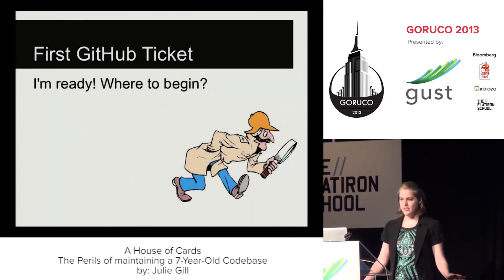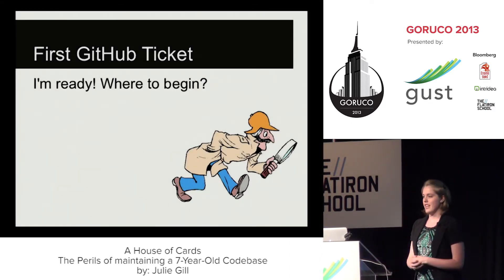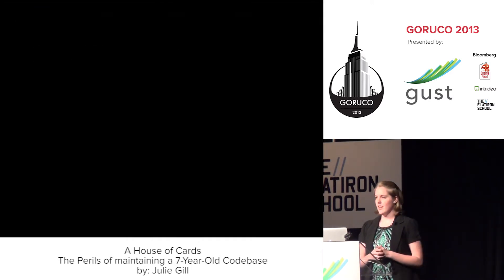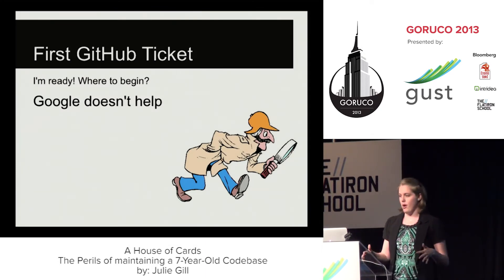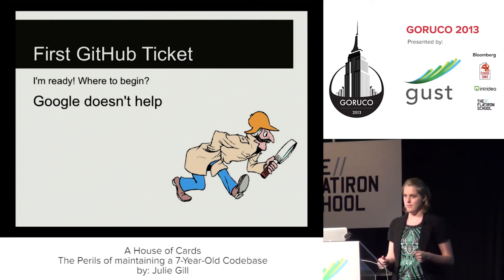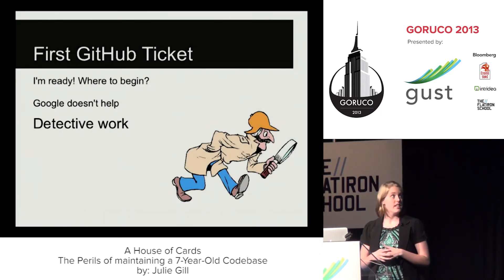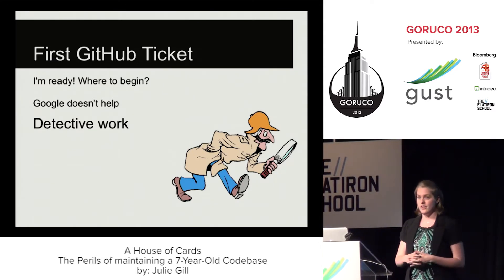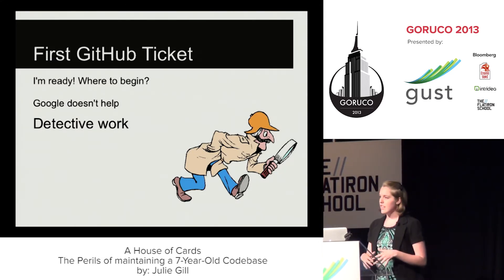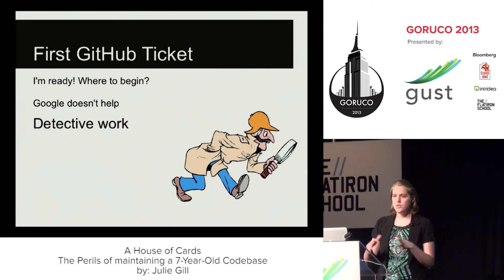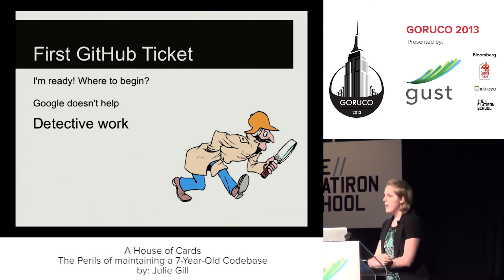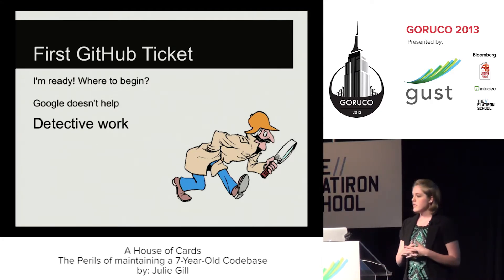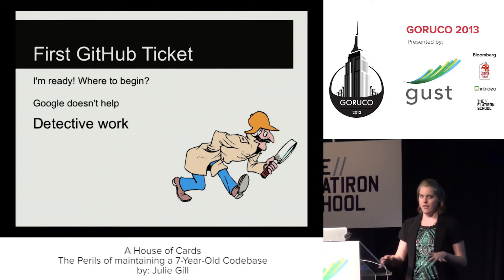So we've surveyed the house of cards a little bit. Let's dive in with the first GitHub issue. I'm ready, but where do I start? Google doesn't help — Google's great, it helps you solve a ton of problems, but it really can't help you find where this bug is. It takes a whole lot of detective work. I'd never had to debug, understand, or fix somebody else's code. It's a really good skill to be able to inspect elements in the browser, follow a trail of views and partials, and trace methods in the debugger several levels deep to figure out what was going on when this was written. Learning to follow and understand these obscure trains of thought is a large part of my job.